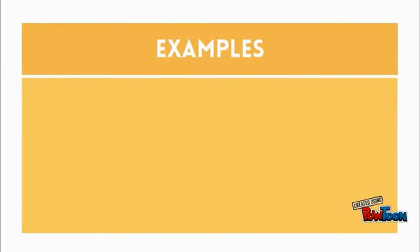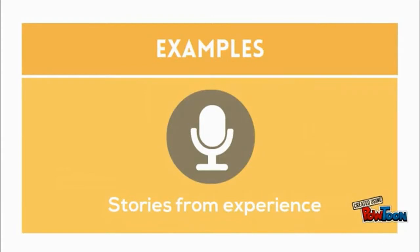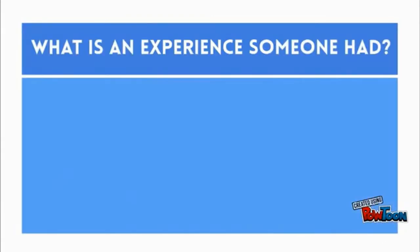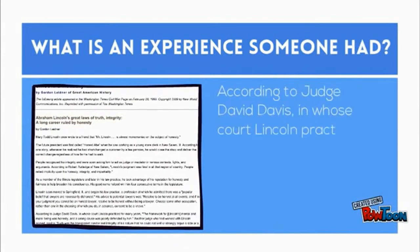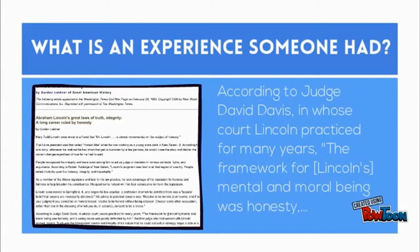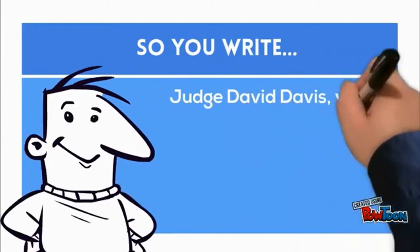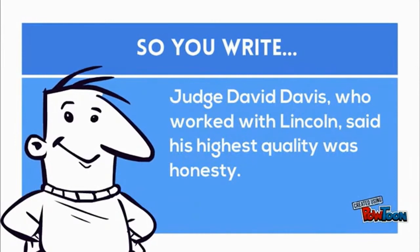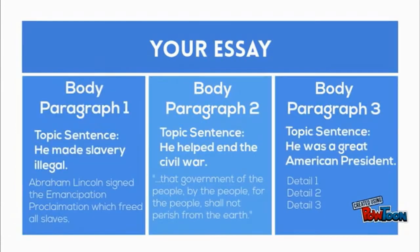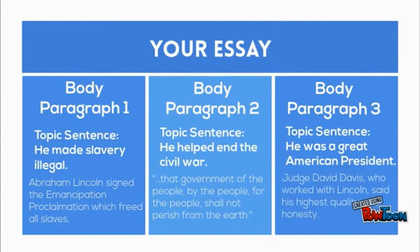Now let's talk about examples. Examples are stories from experience — these could be your own personal stories or experiences of other people. Since we weren't alive during Abraham Lincoln's presidency, let's use someone else's. According to Judge David Davis, in whose court Lincoln practiced for many years, the framework for Lincoln's mental and moral being was honesty. So using that experience, we can write: Judge David Davis, who worked with Lincoln, said his highest quality was honesty. Since honesty is an important character trait, we can use that to back up why he was a great American president.